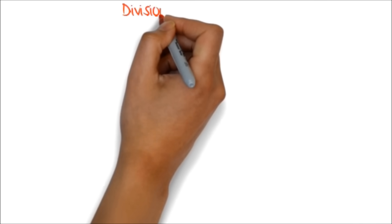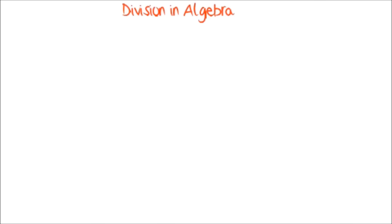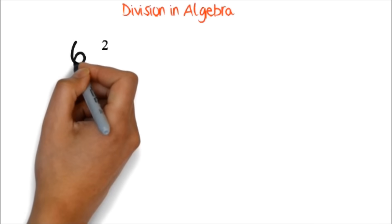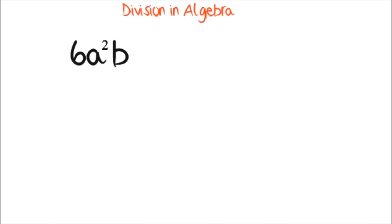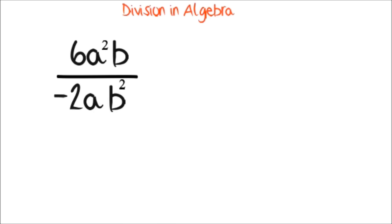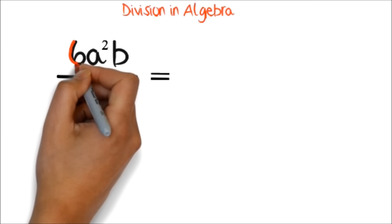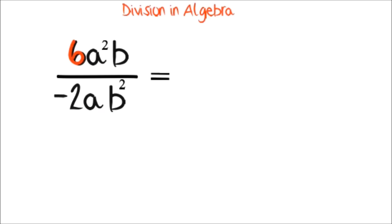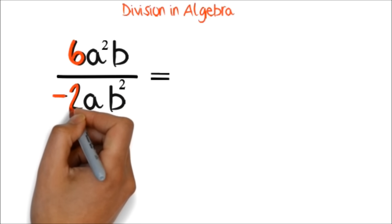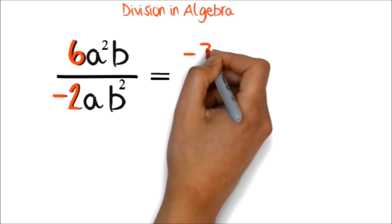Division in algebra. In division, we are still looking at occurrence, but in a slightly different way. Let's look at 6a squared b divided by negative 2ab squared. I will encourage you to write it in the fraction form. It is easier. We divide the numbers as usual. We divide the 6 by negative 2 to get negative 3.